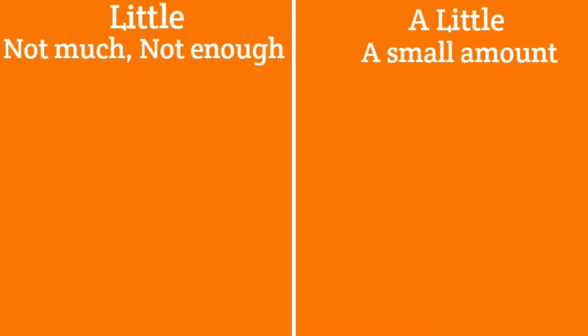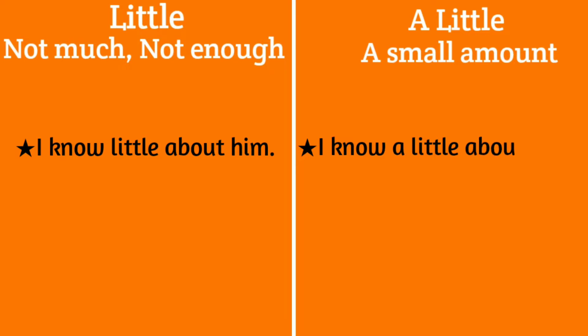Now, 'a little' has a positive attitude. For example: I know a little about him. This means at least some knowledge — a small amount — which is positive. So little is negative, and a little is positive. This is the most important distinction to be clear about.